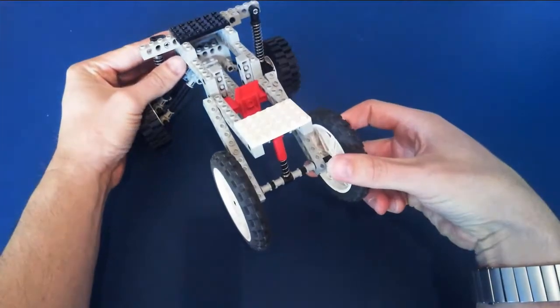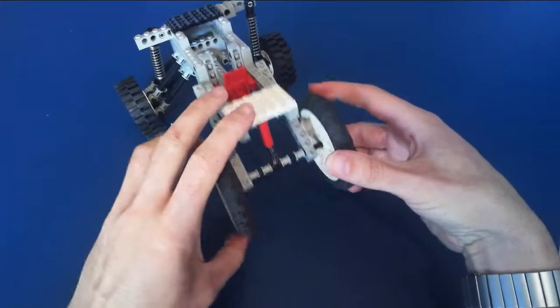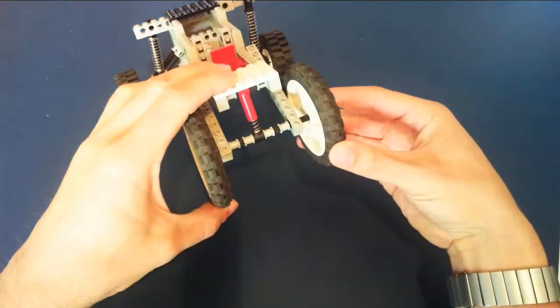Whereas on the rear of the vehicle we have a live axle. We see that the wheels are connected, so if we articulate the suspension, both wheels move at the same time.